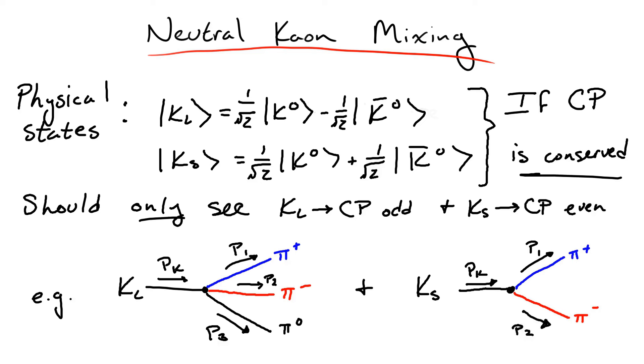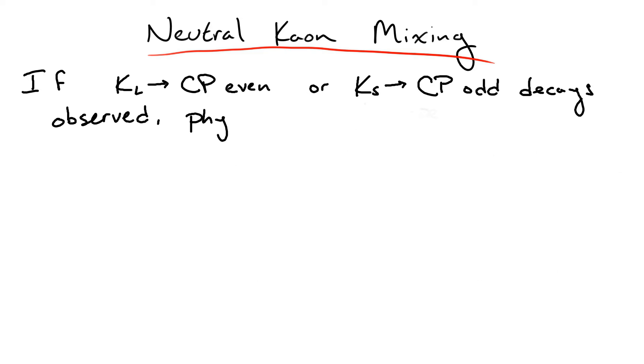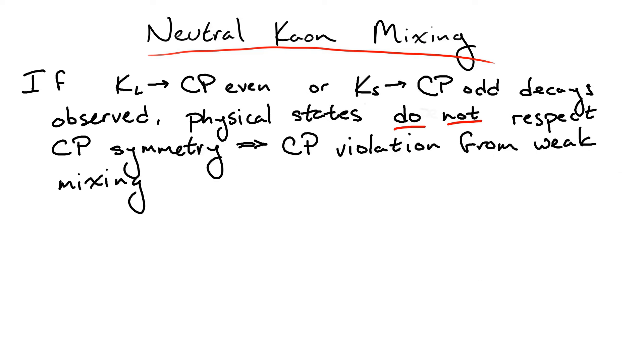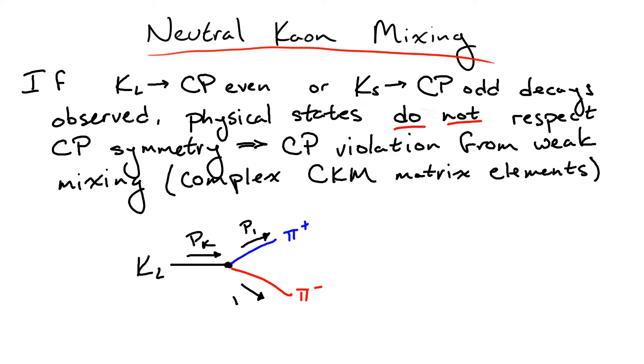Alternatively, this means that if, say, a K-long is seen decaying to a CP-even state, then CP must be violated. In fact, it means that CP must be violated in weak interactions, since this is the only interaction that can mix the K and K-bar particles in the standard model. Luckily, we know exactly how CP-violation could enter weak interactions, through complex phases in the CKM matrix, in a model with at least six quarks.